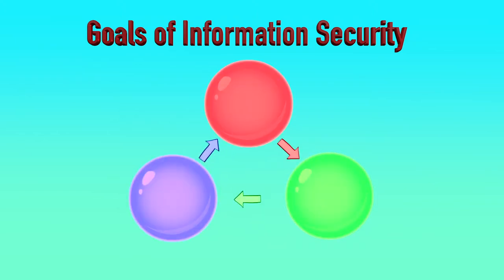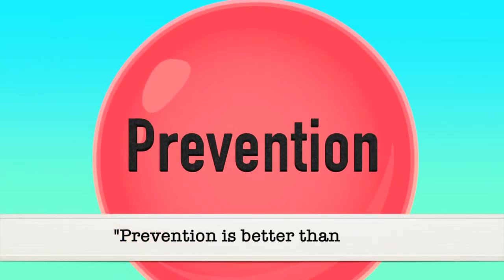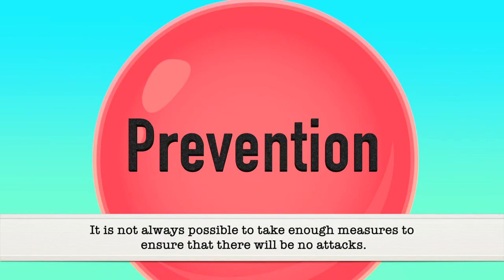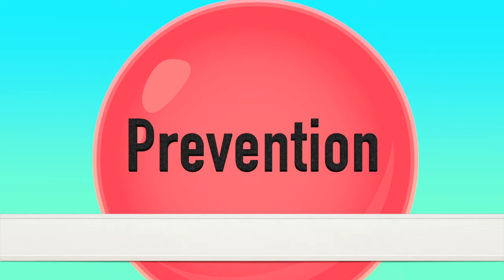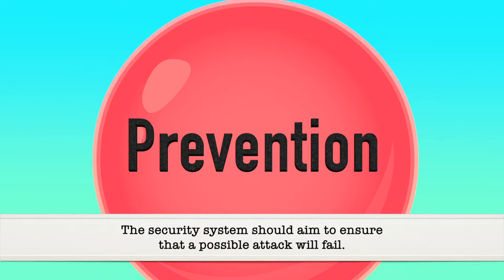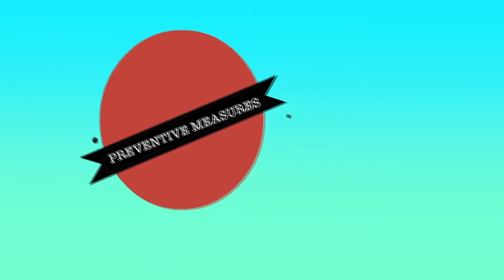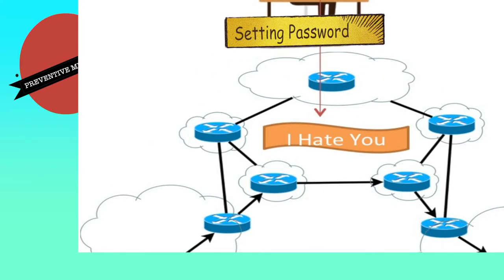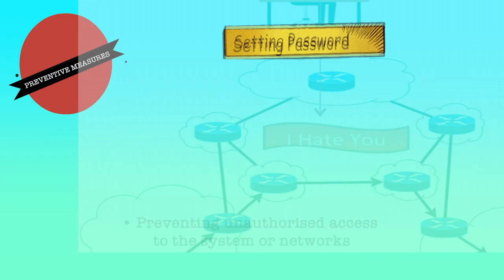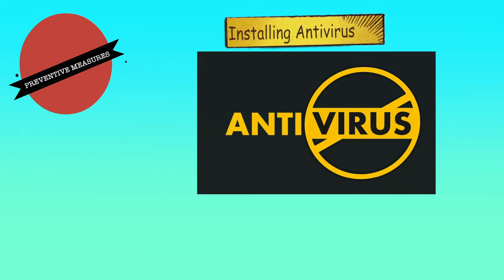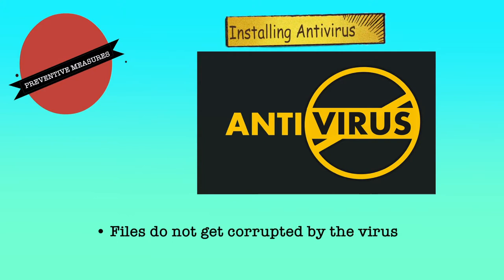Now let us discuss the goals of information security. The goals can be broadly divided into prevention, detection and recovery. Starting with prevention: as we all know, prevention is better than cure, but it is not always possible to take enough measures to ensure there will be no attacks. However, the security system should aim to ensure that possible attacks will fail. One example of preventive measures is protecting a computer system by setting up a password to prevent unauthorized access. Another example is installing antivirus software on every system so that files do not get corrupted by viruses spread through emails or USB drives. It is very difficult to foresee all possible attacks and devise preventive solutions.